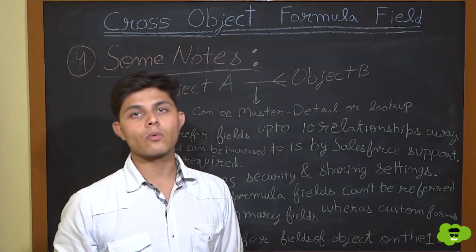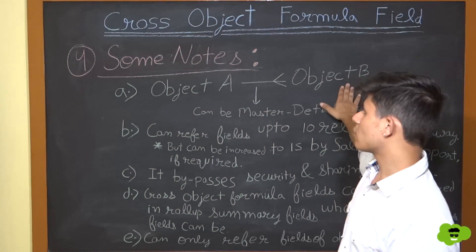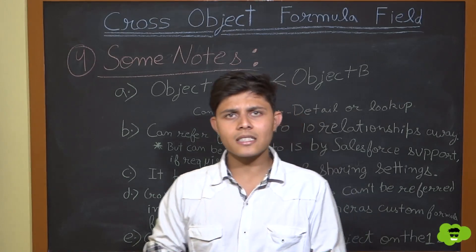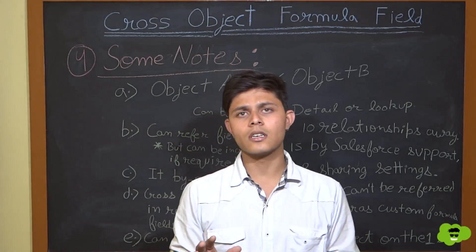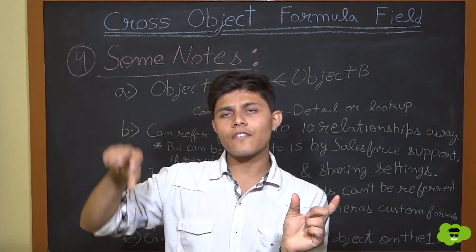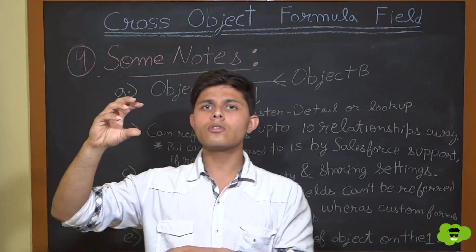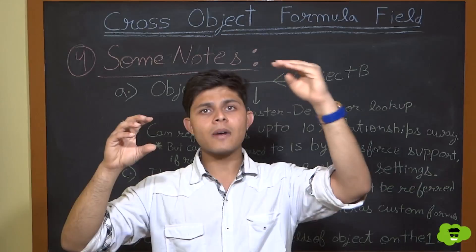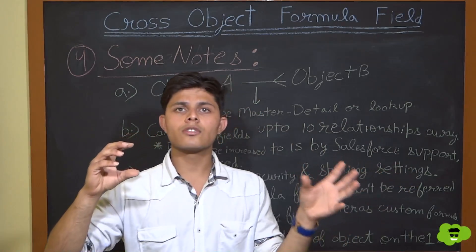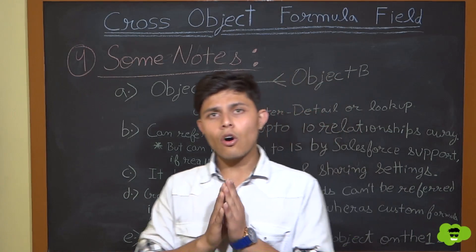Fifth, cross-object formula fields can only reference fields on the one side of a relationship. For example, a Contact's cross-object formula field can reference an Account field because each contact is related to only one account. The reverse — referencing a Contact field from the Account object — is not possible because an account has multiple contacts, creating ambiguity about which contact's field to retrieve.